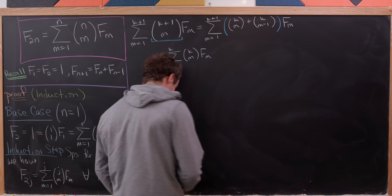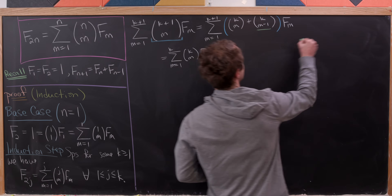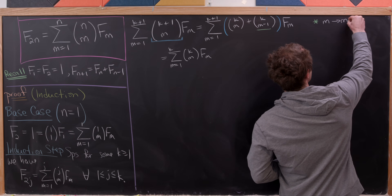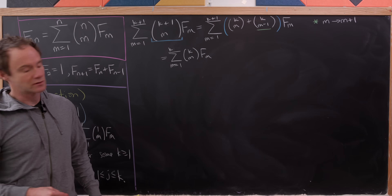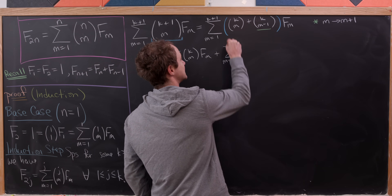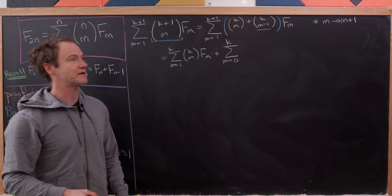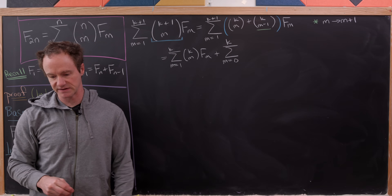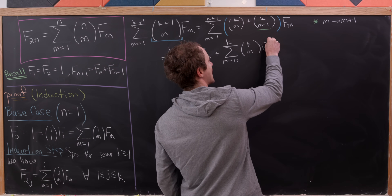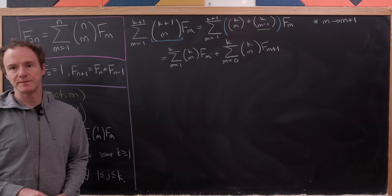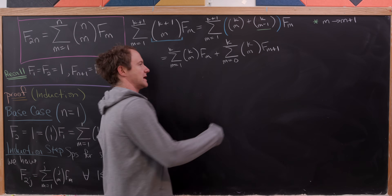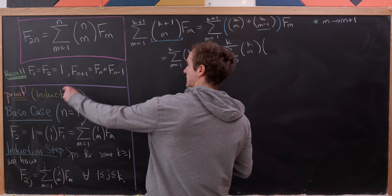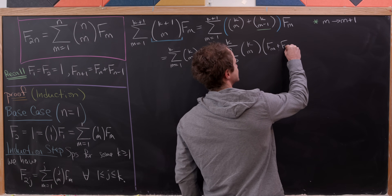For the second part, I'll re-index by replacing all the m's with m+1's. That leaves me with the sum as m goes from 0 to k, with k choose m times f sub m+1. Now I'll replace f sub m+1 using the Fibonacci recursion — that's f sub m plus f sub m-1 — and also replace the lower limit 0 with 1, adding the 0th term separately.